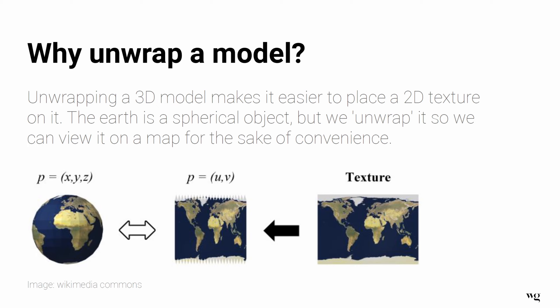So why do we unwrap our UV models? We do it to make it easier to place a flat 2D texture on a complex 3D object. The Earth is a sphere, but we unwrap it so we can view it on a map for convenience — we make it flat so we can put our flat texture on it.